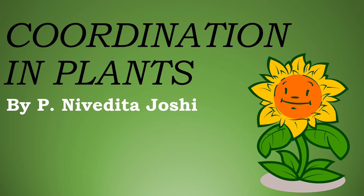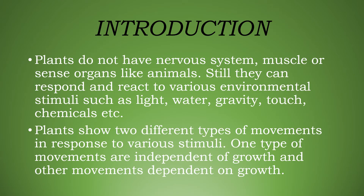In this video on coordination in plants, a topic from class 10th science biology, we will study what kind of system plants have for coordination. Plants do not have any nervous system, muscles, or organs like animals, but they respond and react to various environmental stimuli such as light, water, gravity, touch, and chemicals. The means by which plants give response is of two types.